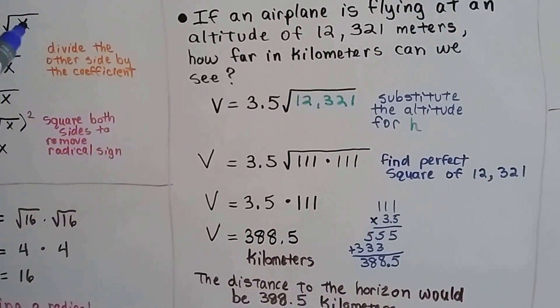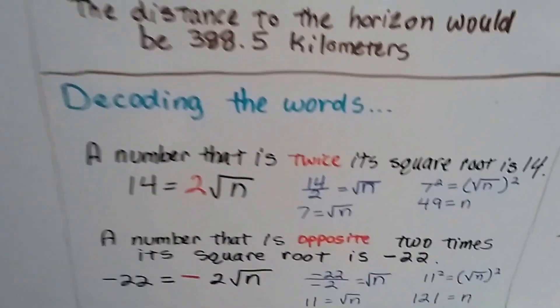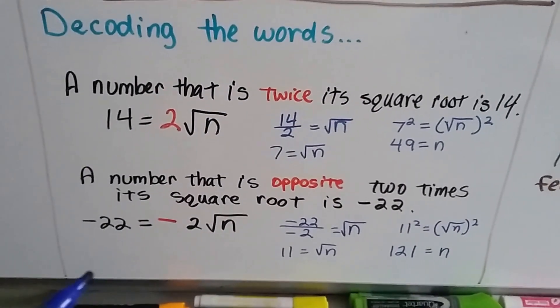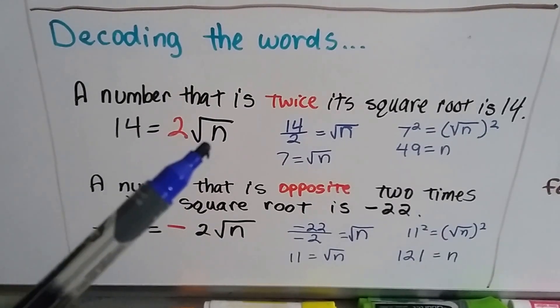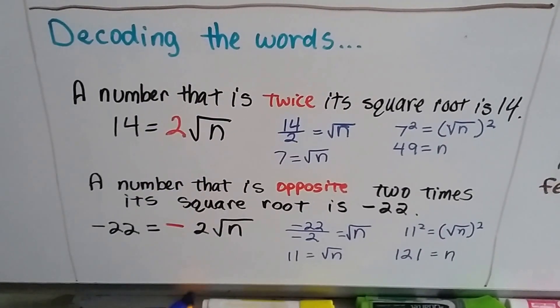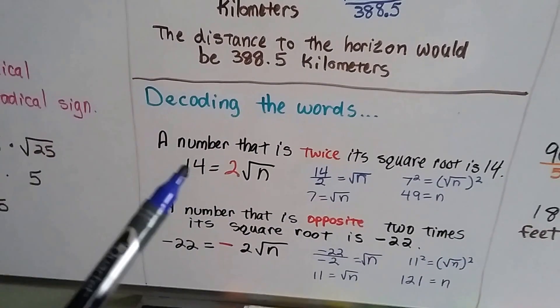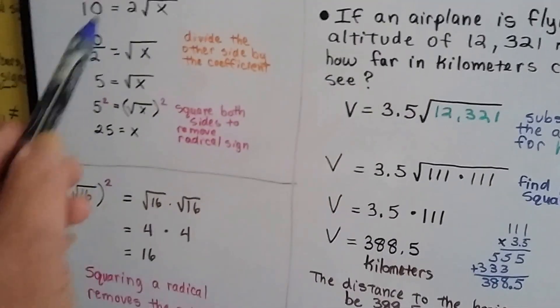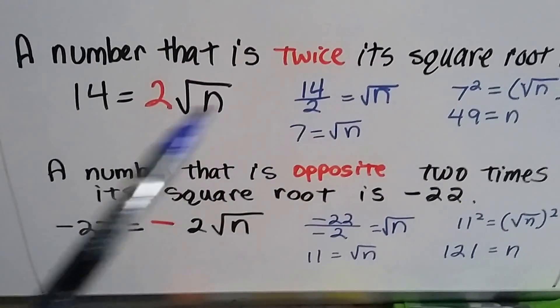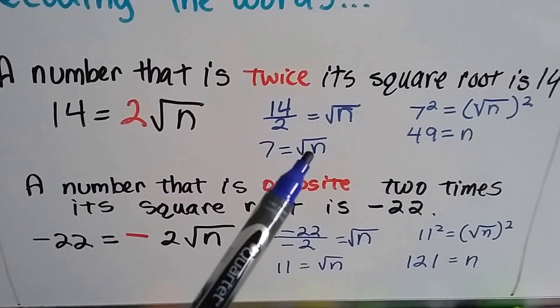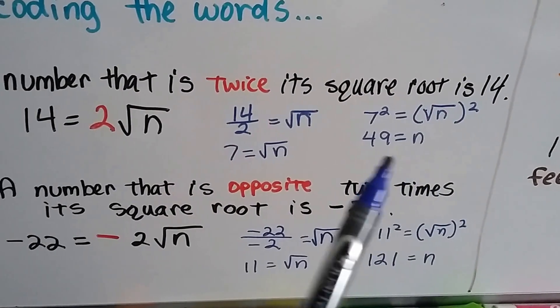In this one, I had a variable underneath the radical sign, so I had to divide by the coefficient. Now, to decode some words for you, you might see this in your textbook. It'll say, a number that is twice its square root. A number that's twice its square root is 2 times the square root of that number, n. If it says it is 14, that means it equals 14. We would use 14 equals 2 times the square root of n, we would use the same method we used here. We'd put the 14 over the 2, the coefficient, that's 7. So 7 equals the square root of n. We square both sides, and 7 times 7 is 49. That removes the radical sign, and we get 49 equals n.